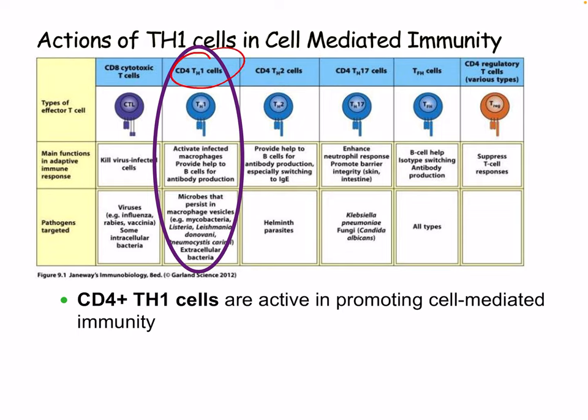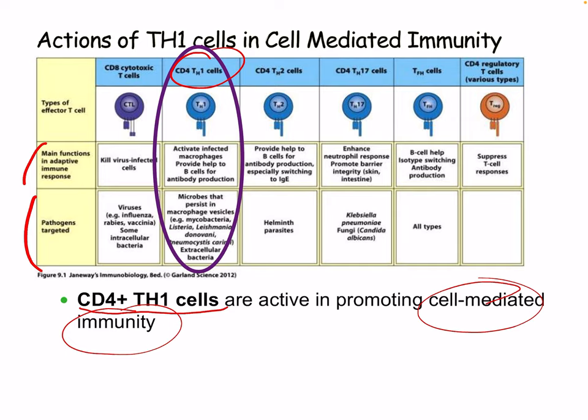In summary, CD4-positive Th1 cells are active in promoting cell-mediated immunity, which is essentially their primary role. Cell-mediated immunity is usually a positive process, but as we've seen, it can be involved in diseases and usually needs to be suppressed in those contexts. Next lecture, we'll be taking a look at Th2.